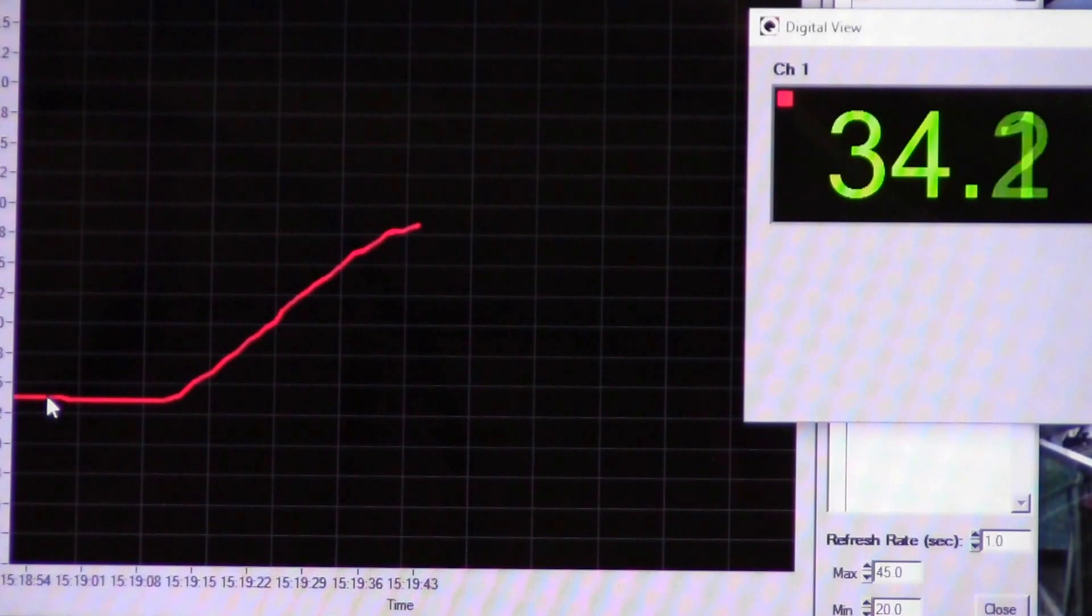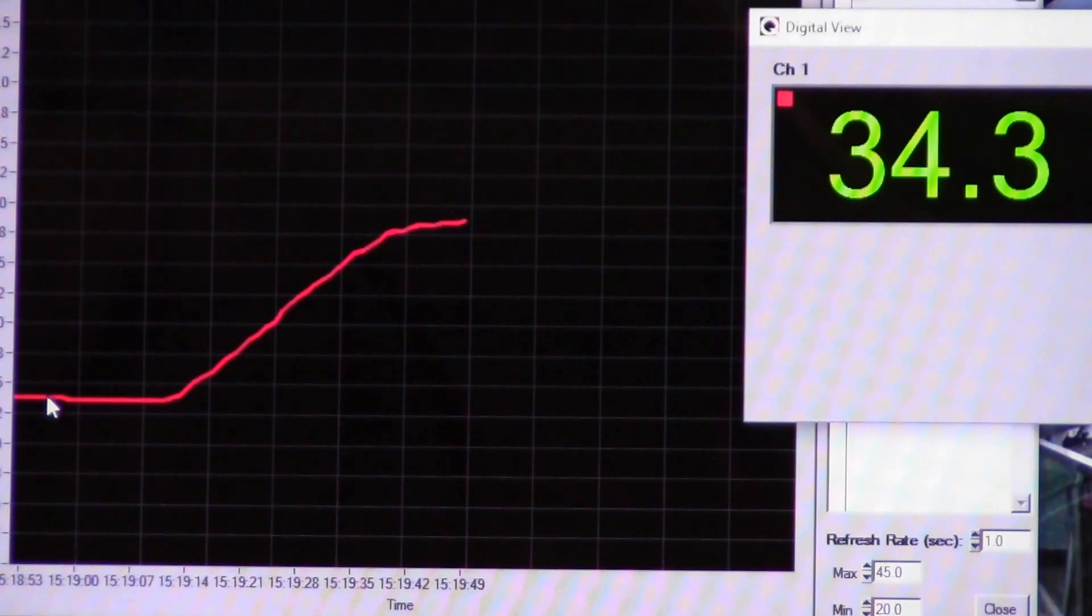It's already starting to slow down. The process is a PID control program that's built into the temperature controller, so it will prevent the temperature from overshooting the 35 degrees.